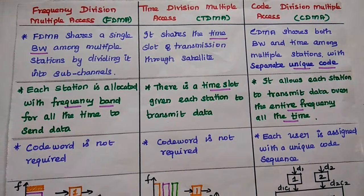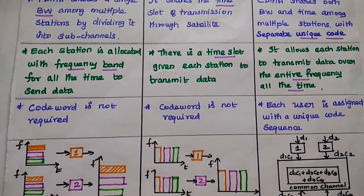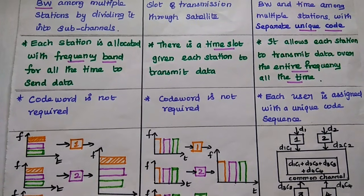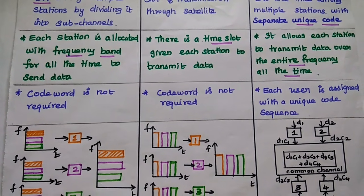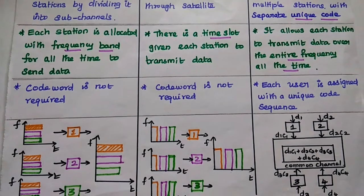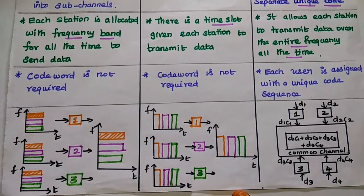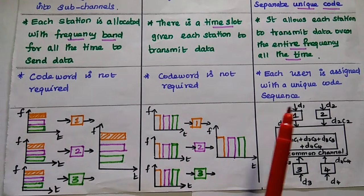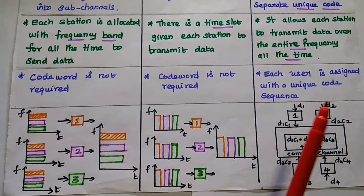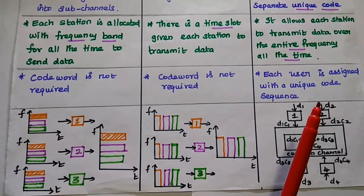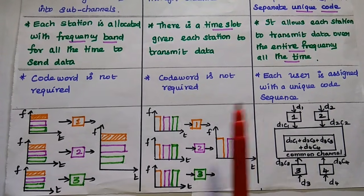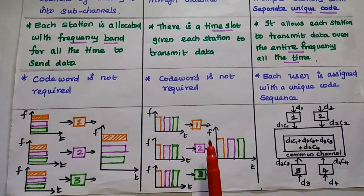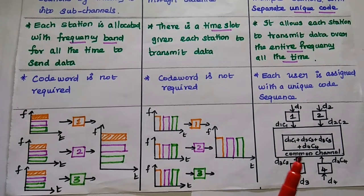In FDMA, a code word is not required. For TDMA also, a code word is not required. But for Code Division Multiple Access, the code is very important because each user is assigned a unique code sequence. This is the diagrammatic representation for FDMA, TDMA, and CDMA.